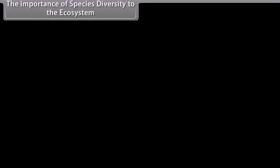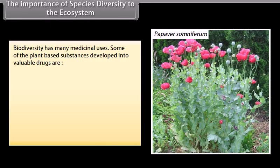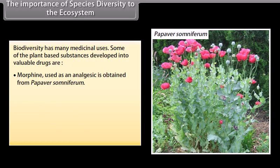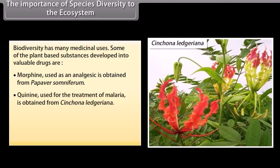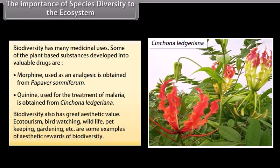Biodiversity has many medicinal uses. Some plant-based substances developed into valuable drugs include morphine, used as an analgesic, obtained from Papaver somniferum, and quinine, used for the treatment of malaria, obtained from Cinchona ledgeriana. Biodiversity also has great aesthetic value — ecotourism, bird watching, wildlife, pet keeping, and gardening are some examples of aesthetic rewards of biodiversity.